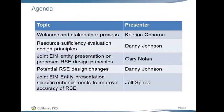Let's go to the agenda for today. First, Danny Johnson from ISO Policy will review the Resource Efficiency Evaluation Design Principles, followed by Gary Nolan, who will present the principles from the perspective of the EIM entities. Then Danny will discuss potential design changes, and Jeff Spires will present specific enhancements to improve the accuracy of the Resource Efficiency Evaluation. Other ISO representatives here to provide support include Don Trethewey, Brad Cooper, Greg Cook, Robert Fisher, Guillermo Batista-Aldaret, Rahul Kaliskar, and John Anders.